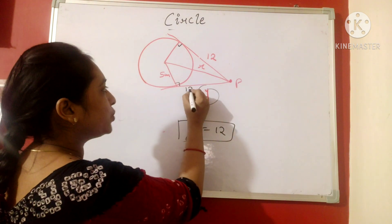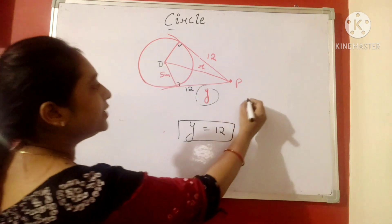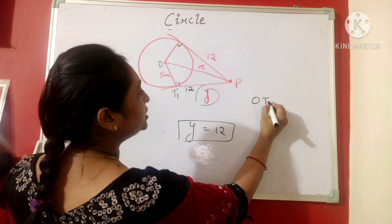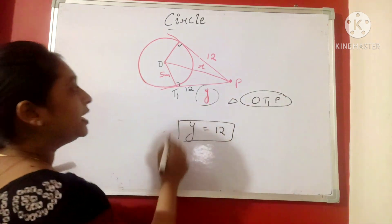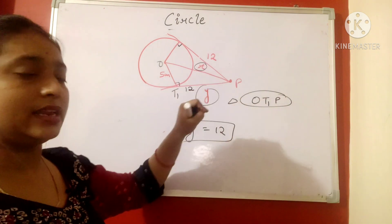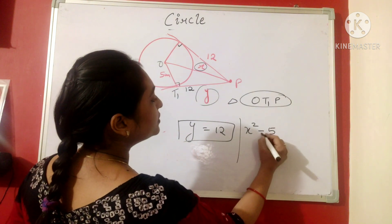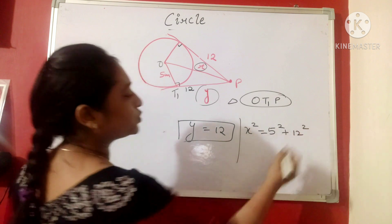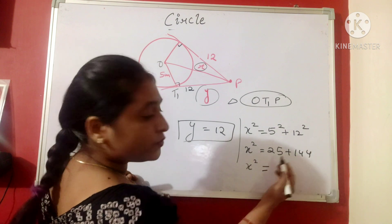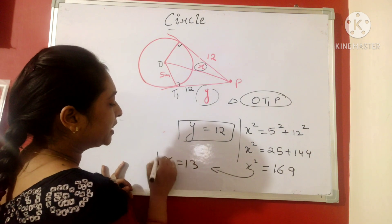Now, if this length is 12 and this is 90 degree, this is 5, let this point be O. Then, if we consider triangle and let this point be T1. Now, O T1 P if we consider the triangle, then this is forming a right angle triangle because it has 90 degree. And here, X is the length which is the hypotenuse. So, we can find out X is equals to square root of 5 square plus 12 square by using Pythagoras theorem. So, X square is equals to 25 plus 144. X square is equals to 169 and here X is equals to 13.